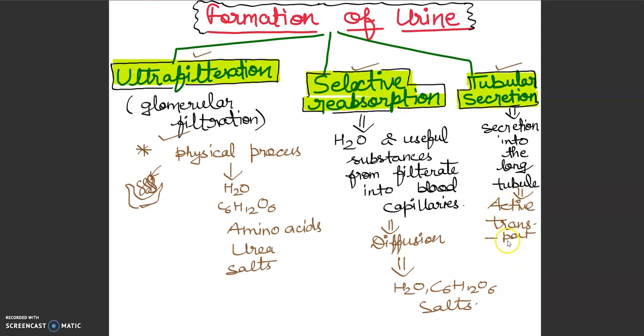The active transport will be from blood into the tubules. The substances are put back in tubules - this is tubular secretion. There will be uric acid, ammonia, and other excretory waste products.